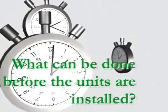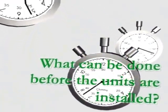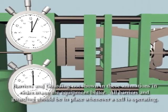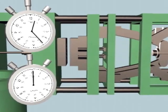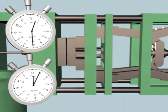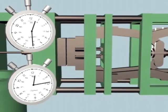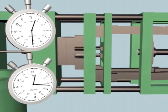What can be done before the units are installed? Consider the optimal die-open distance needed to extract the part and run the reciprocator. Less time is spent opening and closing the die if the die-open distance is shorter.